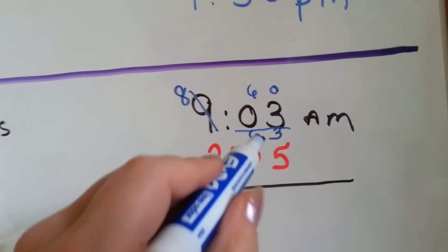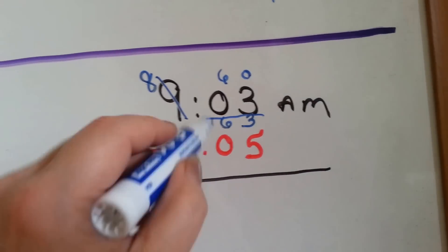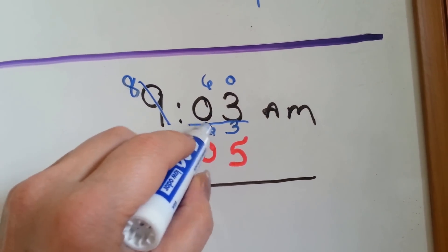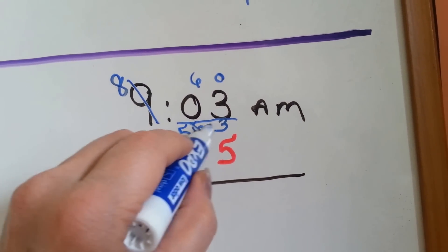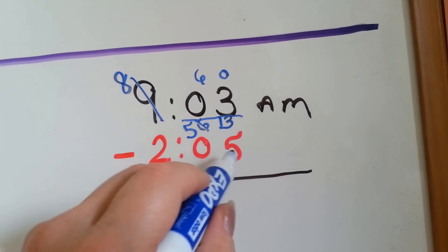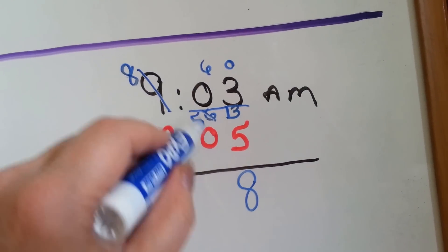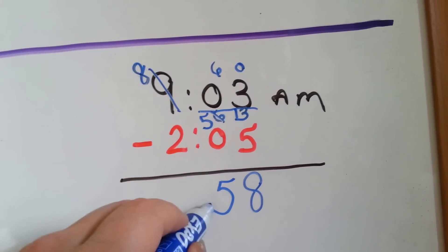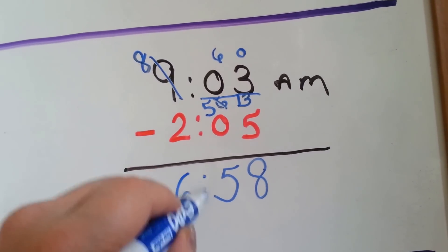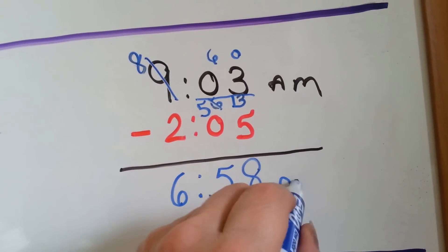Now, can you have 3 and take 5 away? No, you can't. So again we're going to have to borrow. That 6 is going to become a 5, and that 3 is going to become a 13. 13 take away 5 is 8. We're going to drop the 5 down. 8 take away 2 is 6. So the time is 6:58 AM.